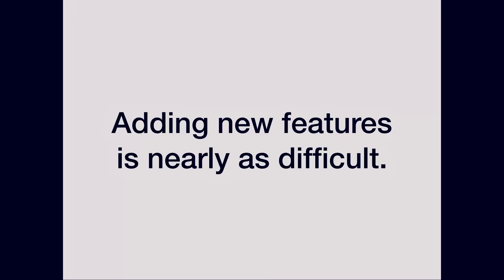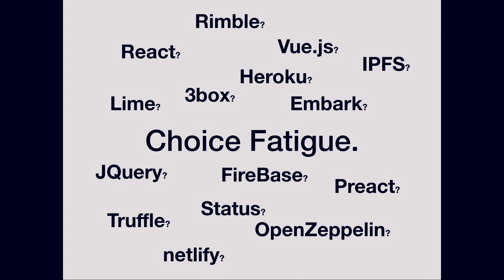Adding new features is nearly as difficult. In blockchain we have Web3, but if you want to use all the other things out there, it's even harder — you need new libraries, new documentation, new sources of information. We also have choice fatigue. These are just some of the tool sets you can use to get started today — they're all awesome projects — but you have to think: are we going to use jQuery, React, Vue, Rimble, Firebase? All of these things contribute to the choice fatigue that makes it difficult to build.